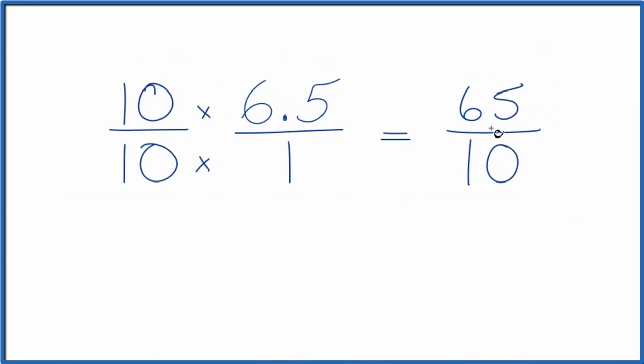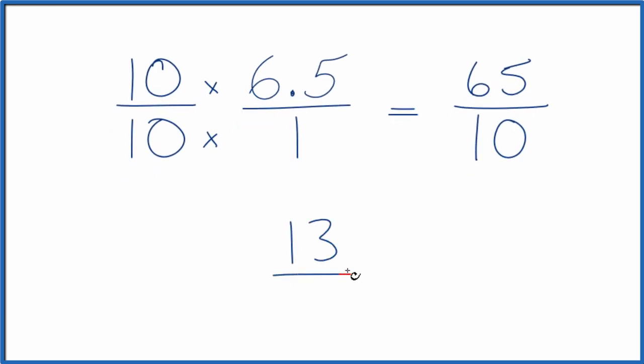5 goes into 65 and into 10. So 5 times 13 is 65, and then 5 goes into 10 two times, 2 times 5 is 10. So we end up with 13 over 2. So 65-tenths, we can simplify that to 13 over 2.